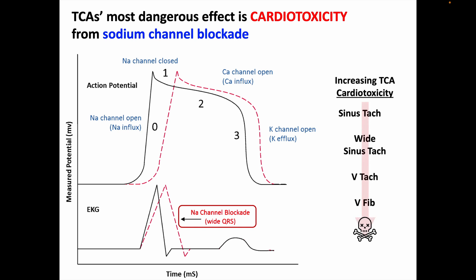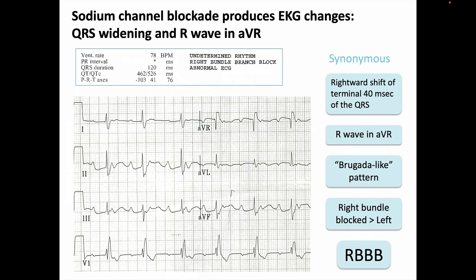Considering the spectrum of cardiac effects with increasing TCA toxicity: first comes sinus tachycardia from anti-muscarinic effects counteracting normal vagal tone on the pacemaker. Then, as sodium channel blockade increases, the QRS widens. If it widens far enough, the patient can develop ventricular tachycardia or worse. Since these changes occur along a spectrum, we may detect sodium channel blockade and begin treatment before malignant arrhythmias develop — which is why getting an EKG in an overdose patient is important.